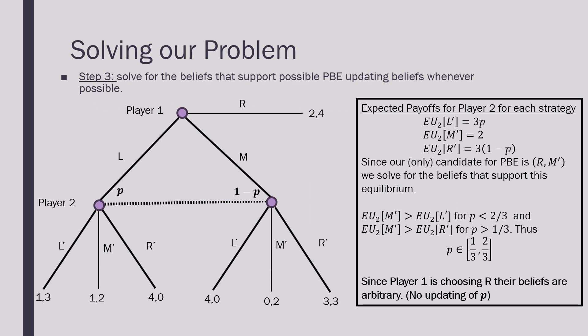Moving on to step number three, because we have to solve for these beliefs for Perfect Bayesian Equilibrium and update them whenever possible, we're going to calculate the expected payoff Player 2 has at each strategy. Remember, Player 2 is going to have a belief of what Player 1 is going to play at this information set.